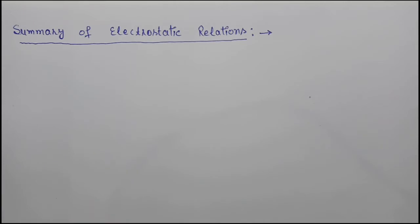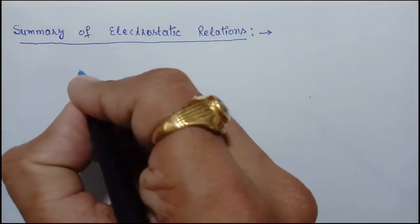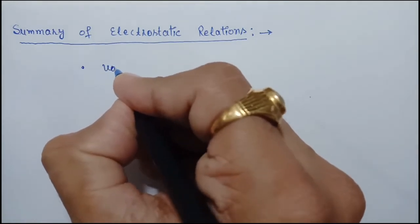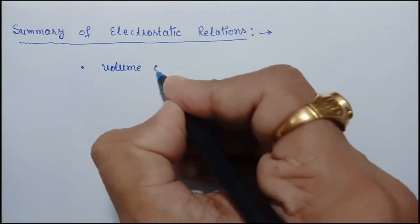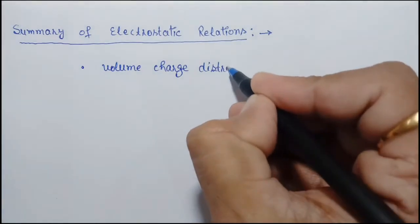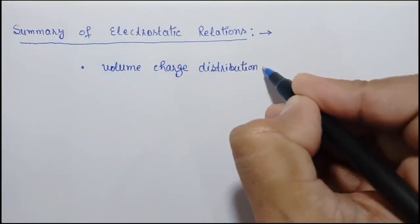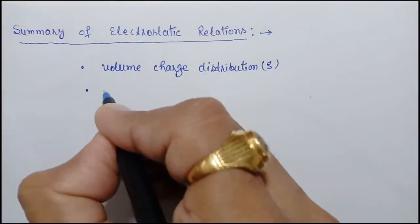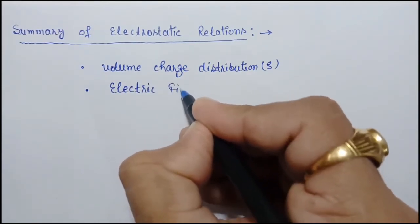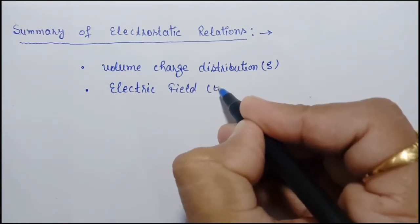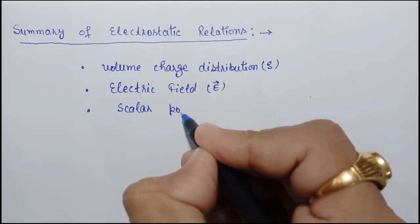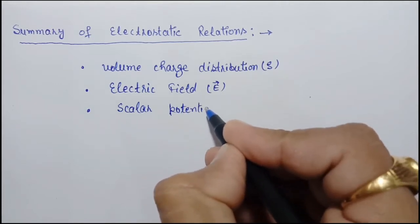When we deal with electrostatics, we have three fundamental quantities. One is the volume charge distribution, that is rho. Second is the electric field, that is E. And the third is the scalar potential, that is V.